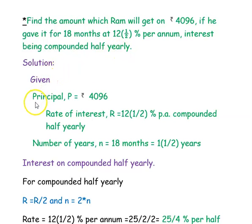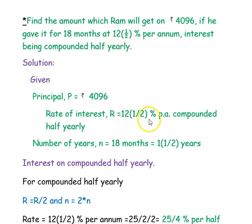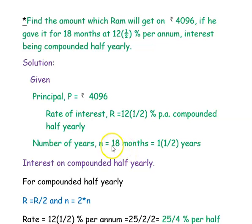First, let us see what is given. The principal is Rs. 4096. The rate of interest is 12.5% per annum. The time is 18 months, which is 12 plus 6 months — that is, 12 months is 1 year and 6 months is half a year — so it is 1.5 years. The interest is compounded half-yearly.